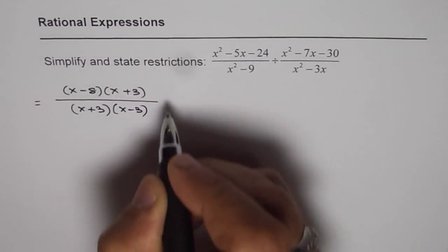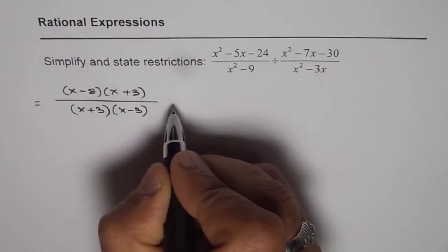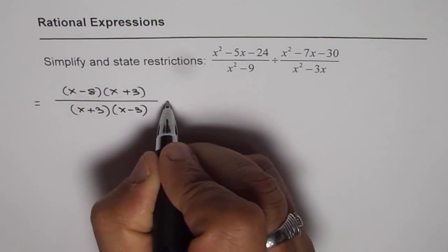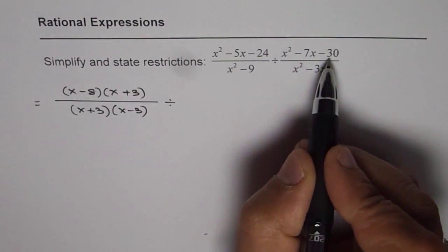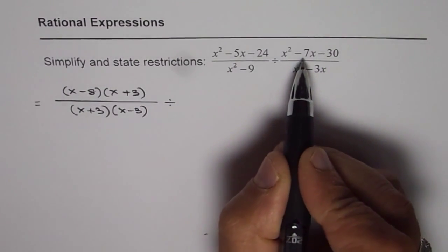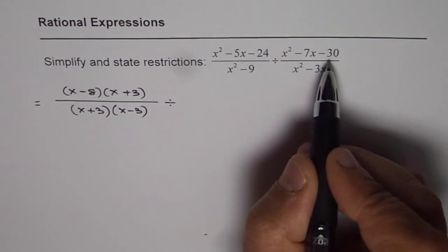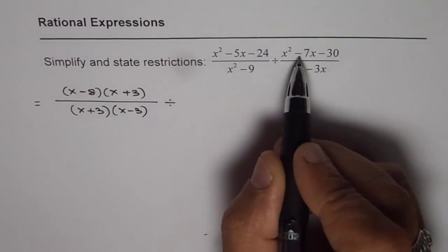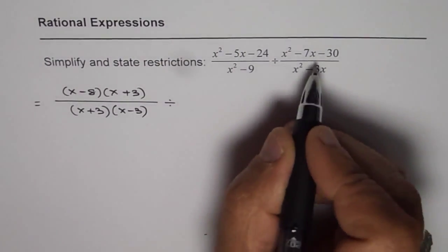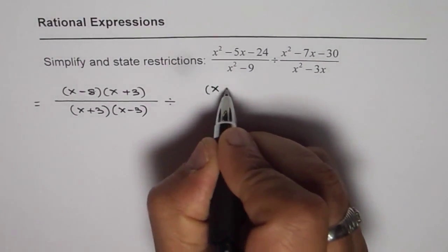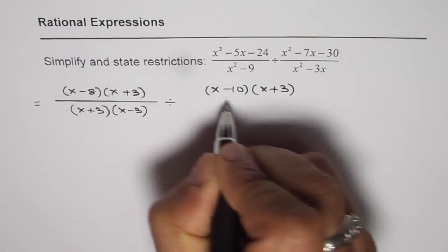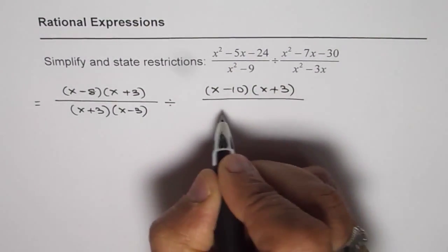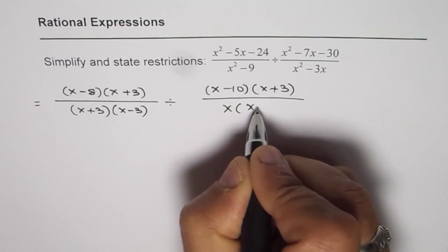We have to divide by this number. Let's first write division and factor this. Product is minus 30, sum is minus 7. So, the numbers could be 10 and 3. Negative 10 and plus 3 will give us the answer. So, x minus 10 times x plus 3, and denominator in this case, we can factor x out. So, we get x times x minus 3 here.